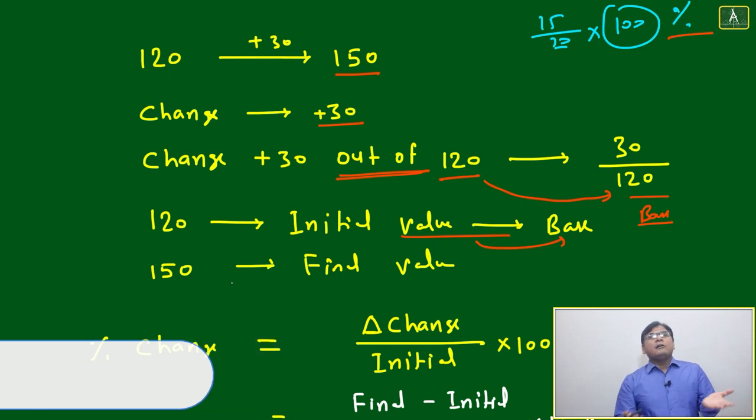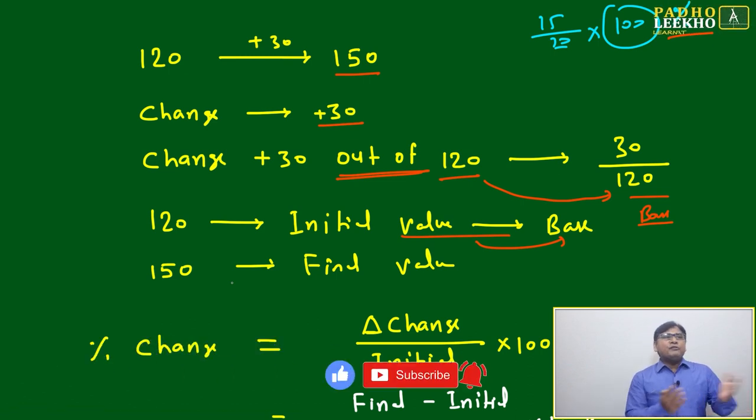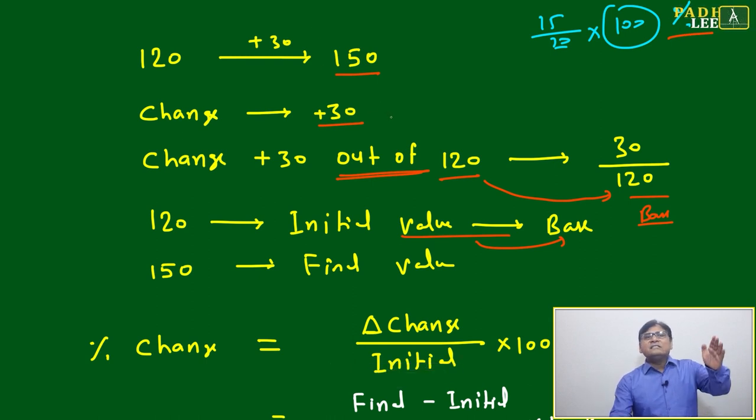From 120 to 150, there's a 30 change. From 150 to 120, the change is also 30. But in percentage terminology it will be different. Either we are going 120 to 150, then 30 will increase, or if you are coming from 150 to 120, 30 will decrease. This amount will not change, the delta will not change.